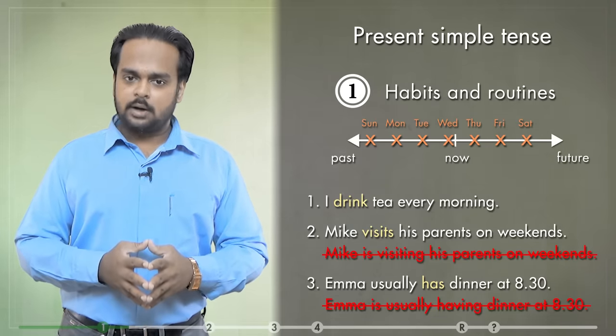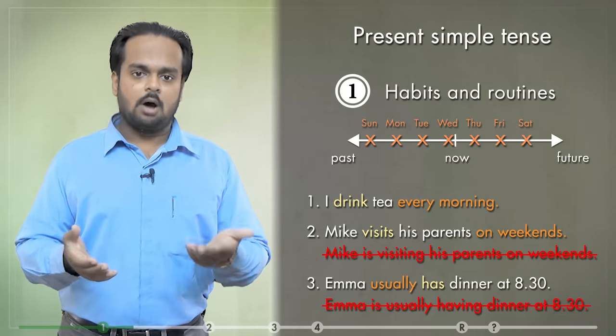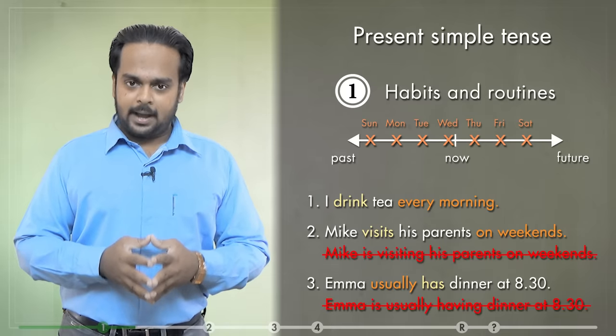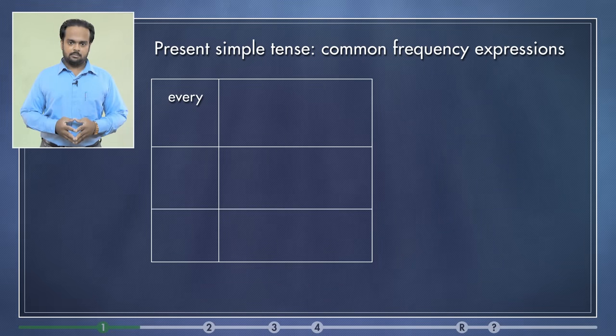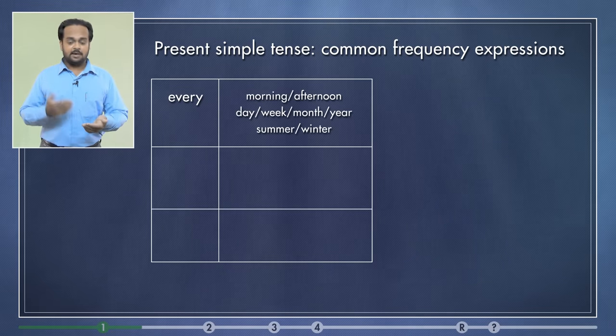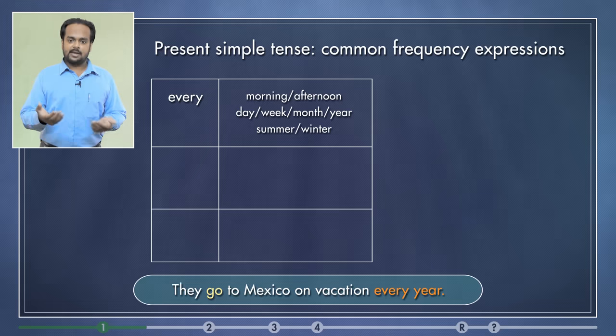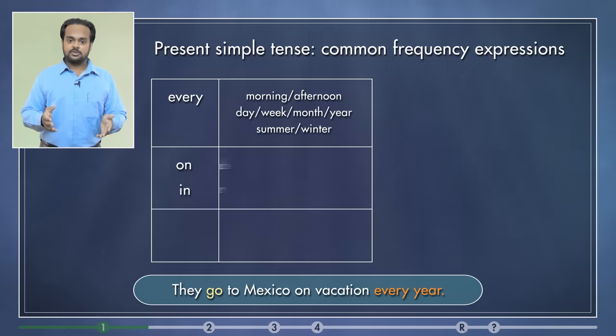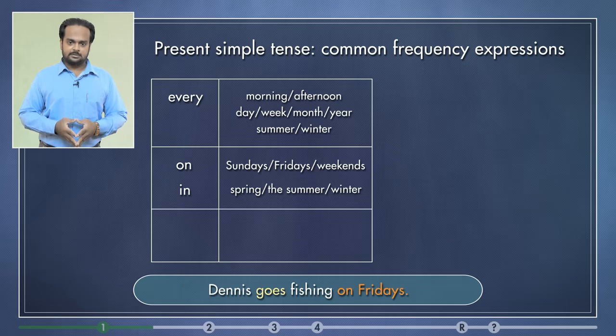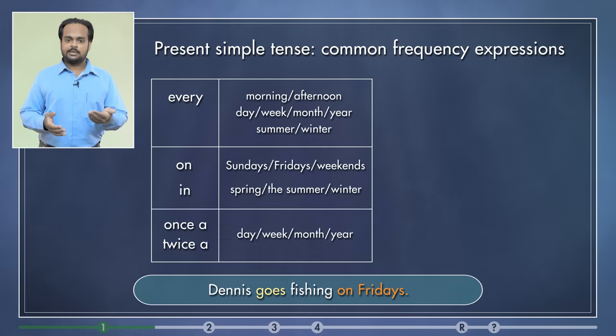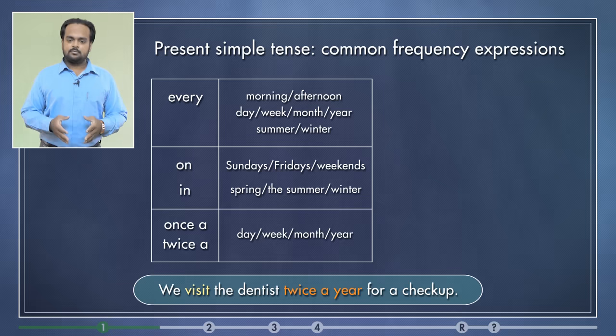OK, I want you to notice one other thing in these examples. You can see how frequently or how often the action happens. Every day, on weekends, etc. When we talk about habits or routines, we normally use these kinds of expressions. The word every, for example, is very common in phrases like every morning, afternoon, every day, week, month, etc. I said I drink tea every morning. Another example is, they go to Mexico on vacation every year. You can also use prepositions like on or in. As in, Mike visits his parents on weekends. Or Dennis goes fishing on Fridays. And then there are expressions like once a week, three times a year, etc. For example, we visit the dentist twice a year for a check-up.